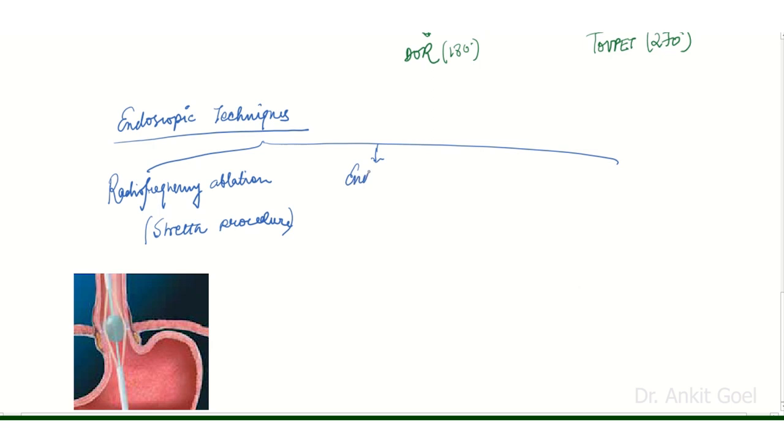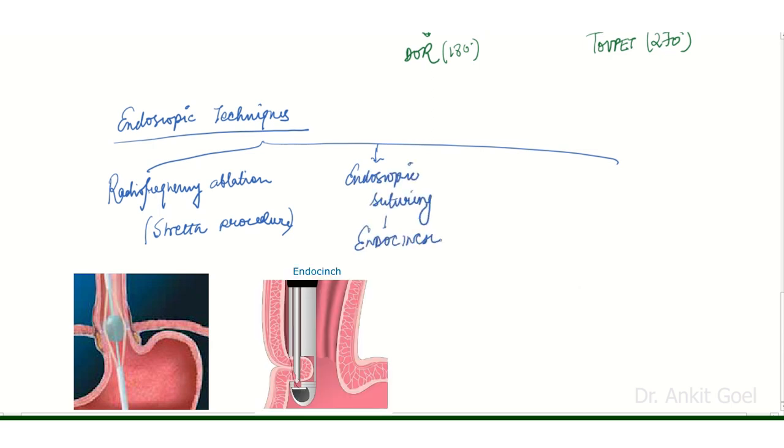The next is endoscopic suturing, that is the EndoCinch procedure, in which deep sutures are placed in the gastric mucosal folds just below the gastroesophageal junction to create a valve-like mechanism to narrow the region and thus prevent reflux, as we can see in the image given below.